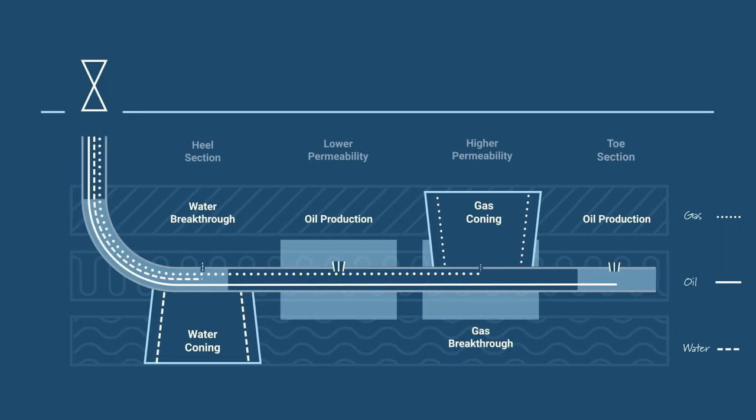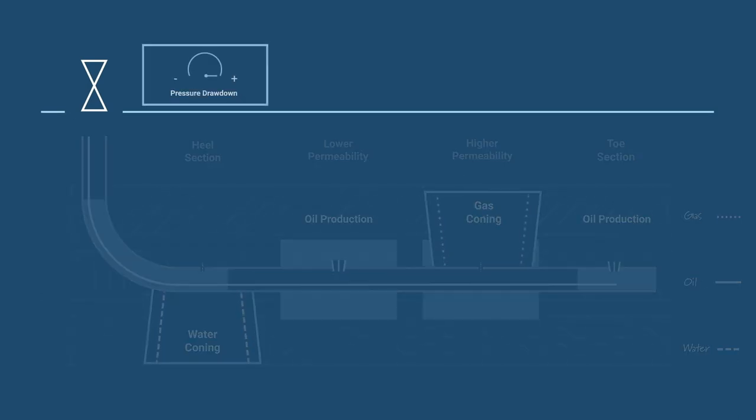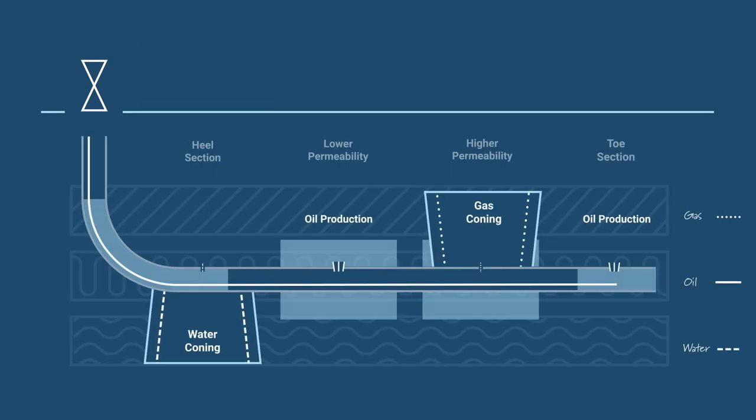It is precisely by choking the unwanted fluids down in the reservoir, zone by zone, that you avoid having to choke the entire well at the surface. Because the well is able to remain open for oil production, regardless of water and gas coning, the well's lifetime is extended. This improves both the daily production of oil and ultimate oil recovery.